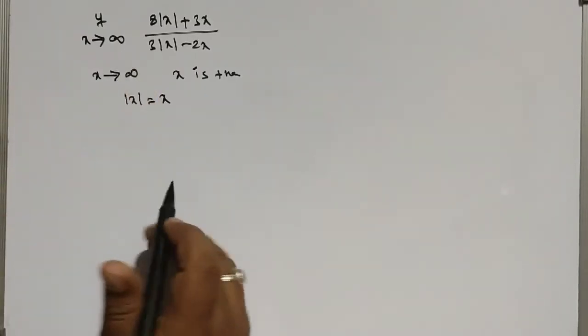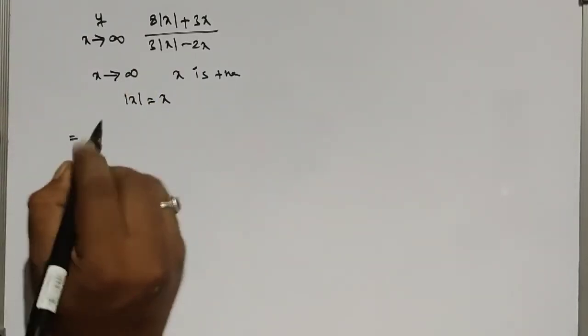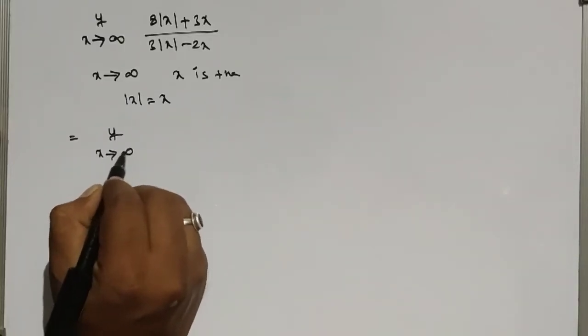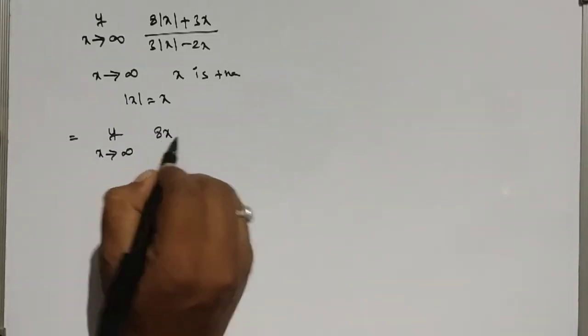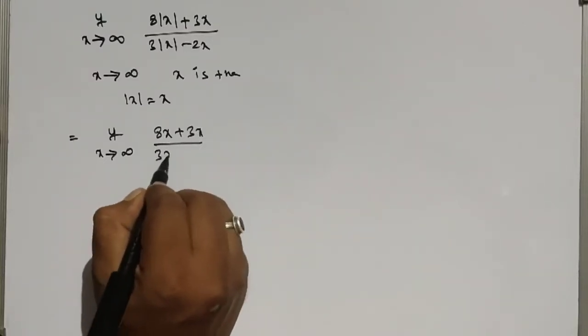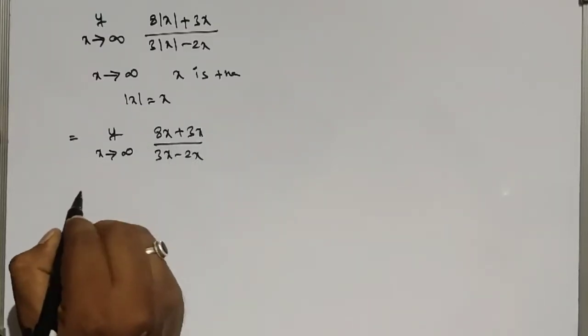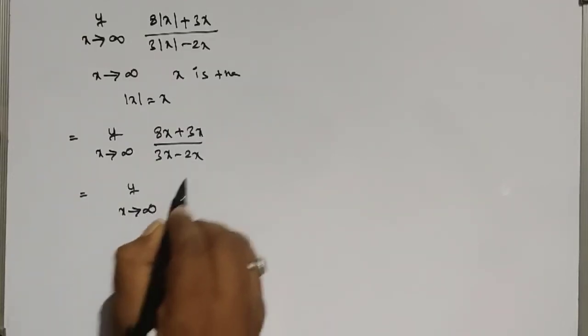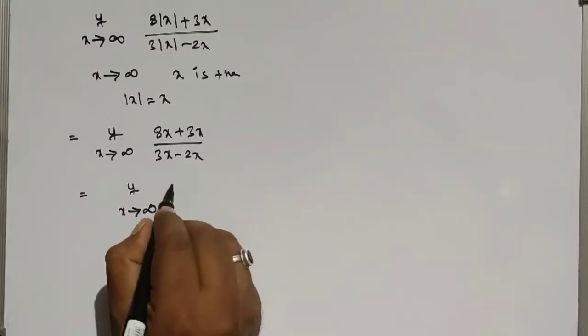Now you can write x in place of |x|, therefore it becomes limit x tending to infinity of (8x + 3x)/(3x - 2x). Now it becomes limit x tending to infinity: 8x plus 3x becomes 11x.